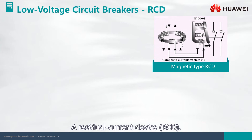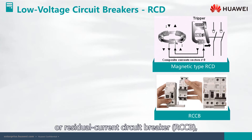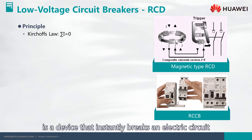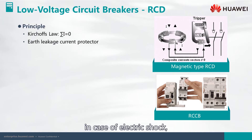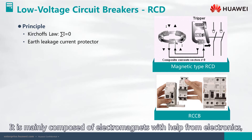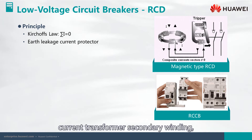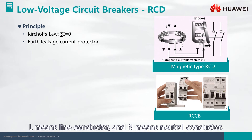A Residual Current Device, RCD, or Residual Current Circuit Breaker, RCCB, is a device that instantly breaks an electric circuit in case of electric shock, preventing serious harm. It is mainly composed of electromagnets assisted by electronics, a current transformer, secondary winding, transformer core, and test push button. L means line conductor and N means neutral conductor.